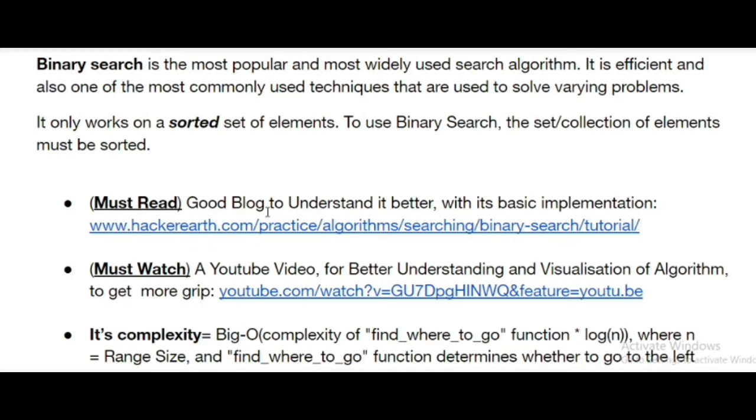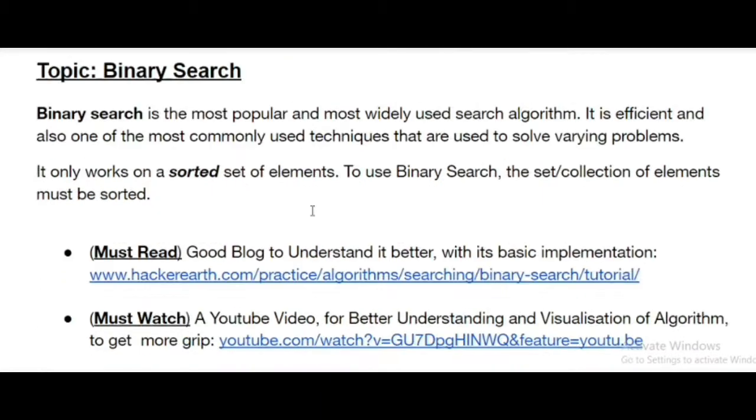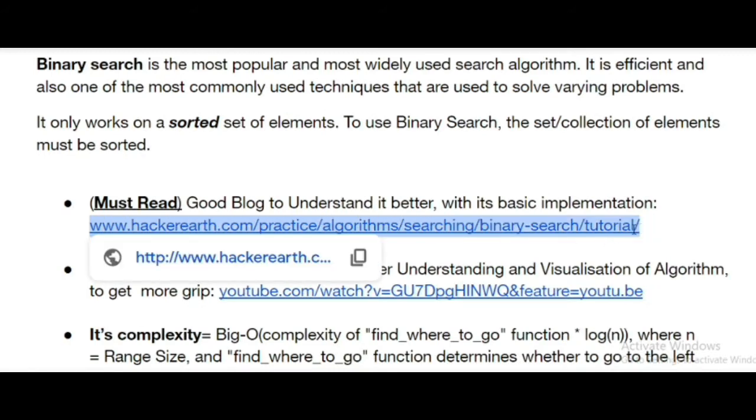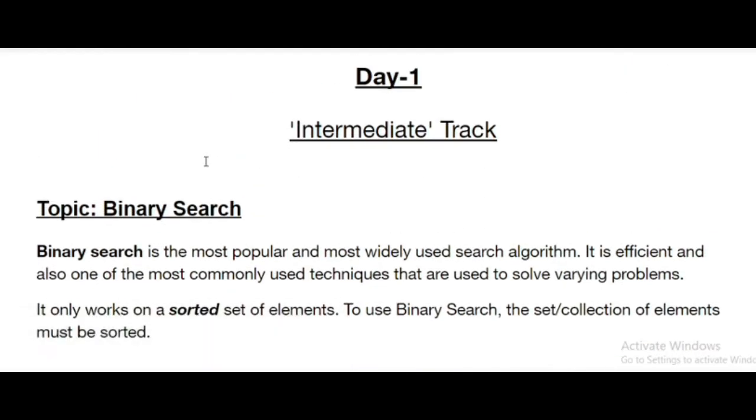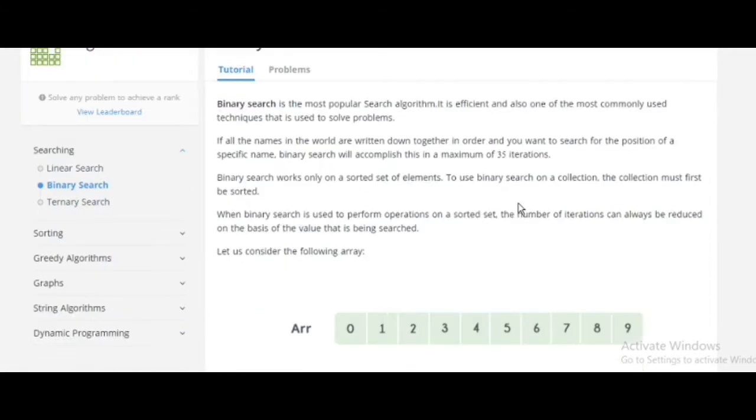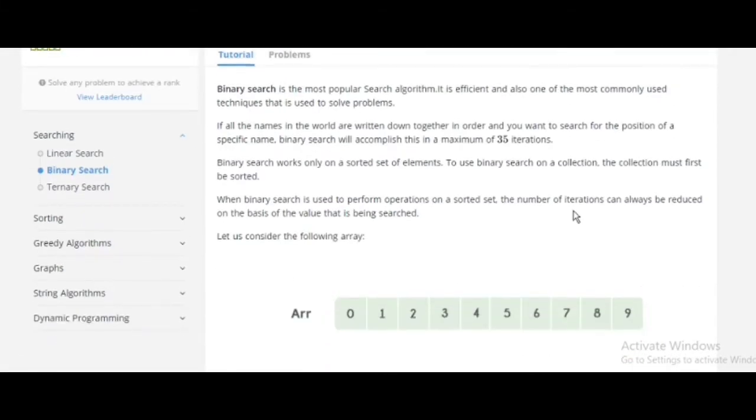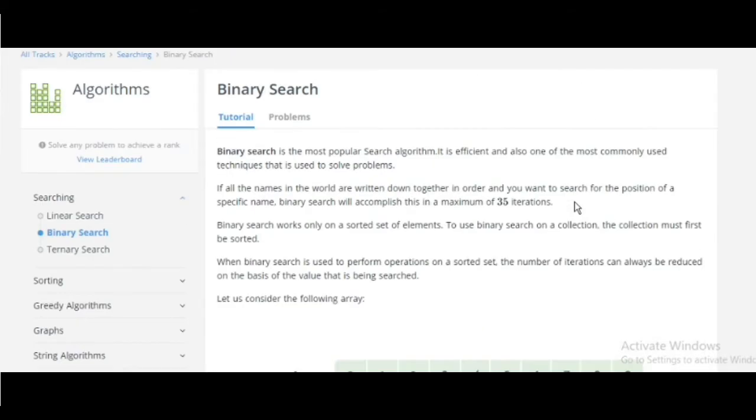The mystery thing is a good blog to understand it better with its basic implementation. I will share this link. You can check this out. This is intermediate track. People are trying to help others because they want to develop this competitive programming sense in others, and it also clears their concepts. This is the tutorial of binary search.